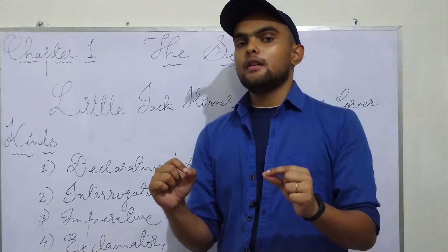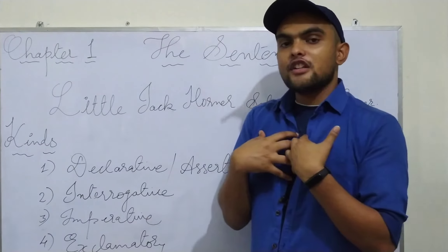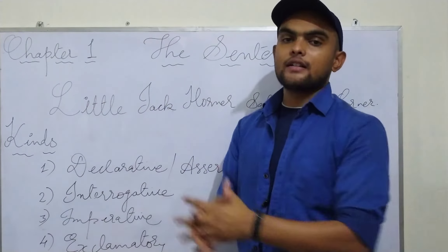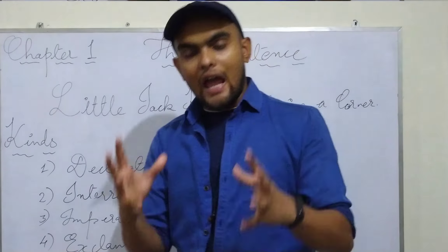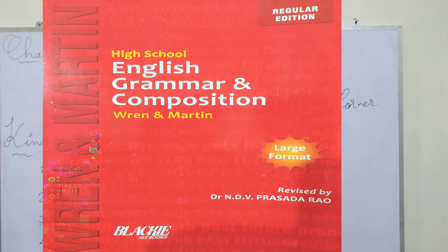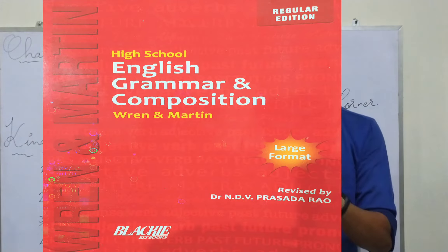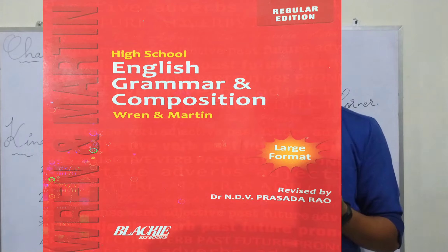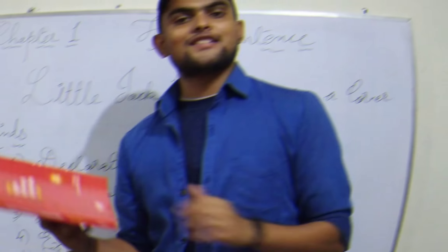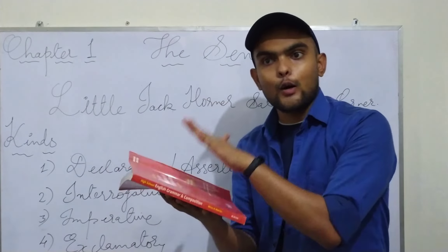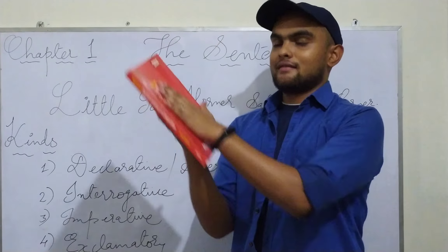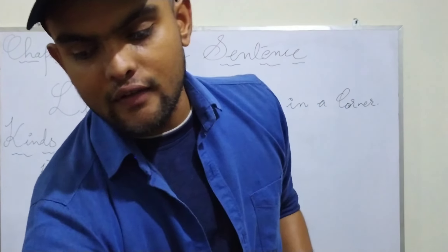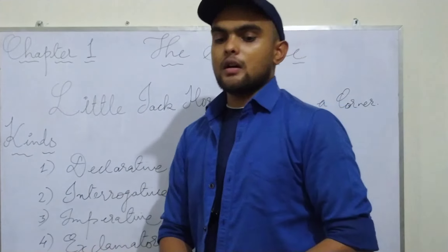Moving forward, I will be teaching grammar for high school sections like 8, 9 and 10. We have a book — previously I have shown you the book — High School English Grammar and Composition, Wren and Martin. This is, I can say, this is a holy bible of grammar. So, that is about Wren and Martin.